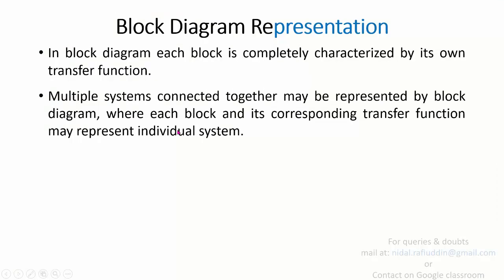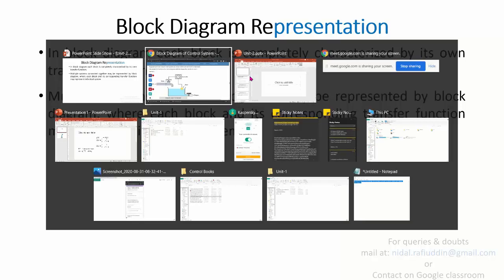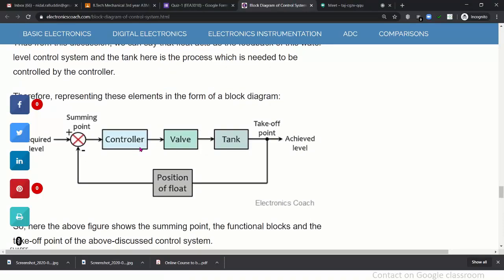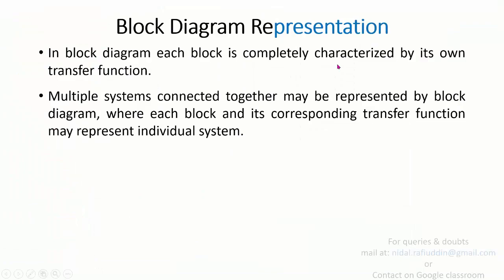Nowadays there are good digital sensors, such as infrared-based sensors where infrared signals are sent and received and the distance is calculated. Ultrasonic sensors are also very accurate. In a block diagram, each block is completely characterized by its own transfer function. For example, there will be a block for the controller comprising mathematical relations between the output and input — that is, the transfer function of that block, such as the transfer function of the valve.